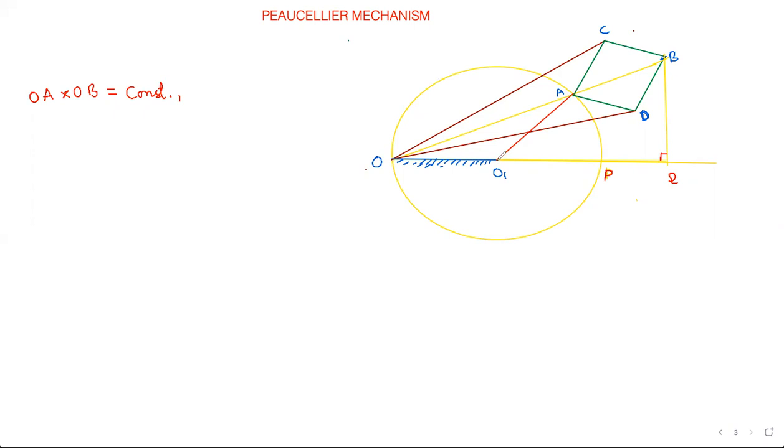With center as O, O1, and A is rotating on the circumference of that circle. B should trace a straight line. What are the links? This is link number one, this is link number two, and this is three, four, five, six, and this is seven. So total we have seven, and then we have not counted this lower one, eight. So total eight links, and all revolute pairs over here - here, here, here, and here. All these are revolute pairs.